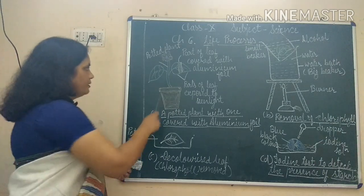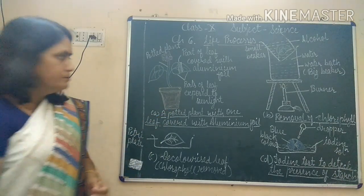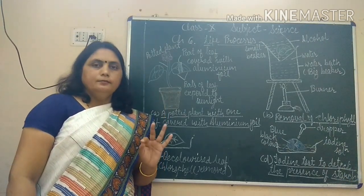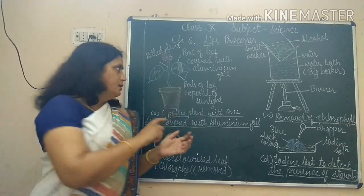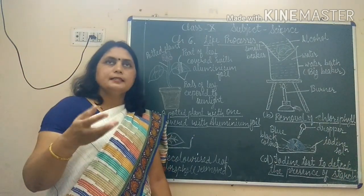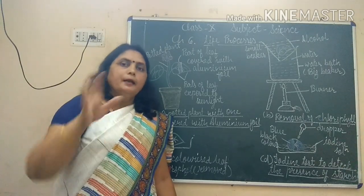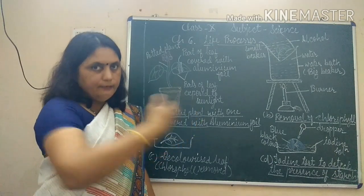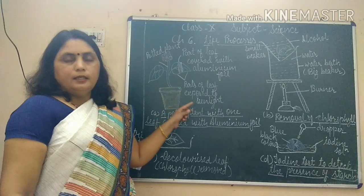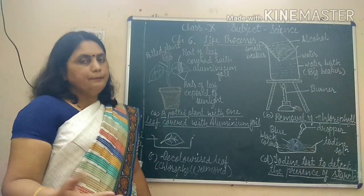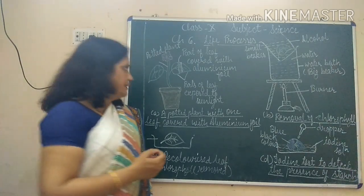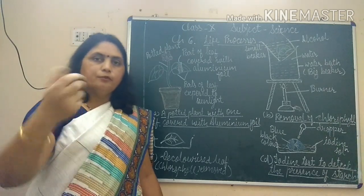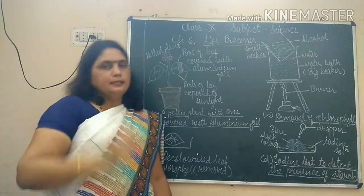After three to four days we pluck this leaf, remove the aluminum foil, and put it into warm water for some time. When placed in warm water, the plasma membrane or cell membrane breaks down. This makes it easier to allow the iodine to enter into the cells when we perform the iodine test later. The leaf becomes more permeable to iodine.